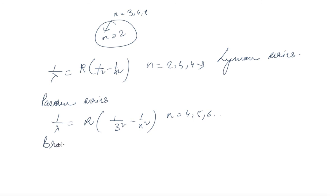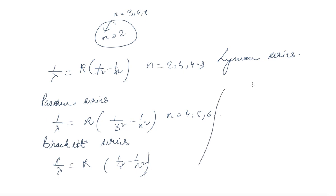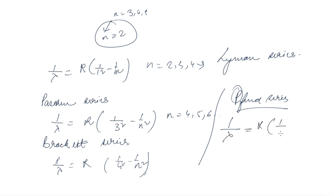Next comes the Brackett series, given by 1/λ = R × (1/4² − 1/n²). After that comes the Pfund series, given by 1/λ = R × (1/5² − 1/n²), where n = 6, 7 and so on. These are some of the well-known or famous series in atomic spectra.